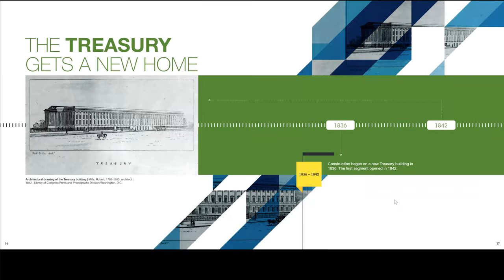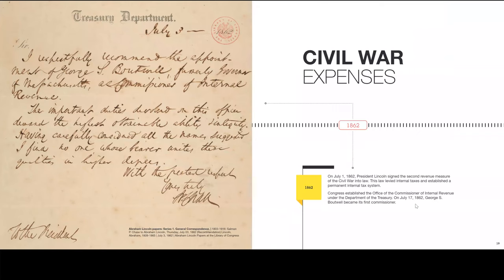The Treasury gets a new home. This is the architectural drawing of the building that was to come, built approximately between 1836 and 1842.